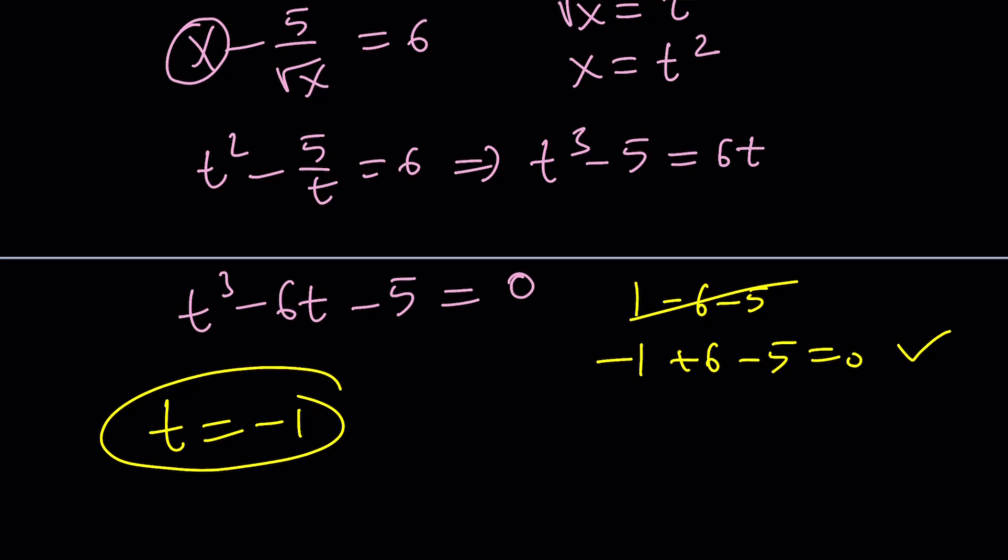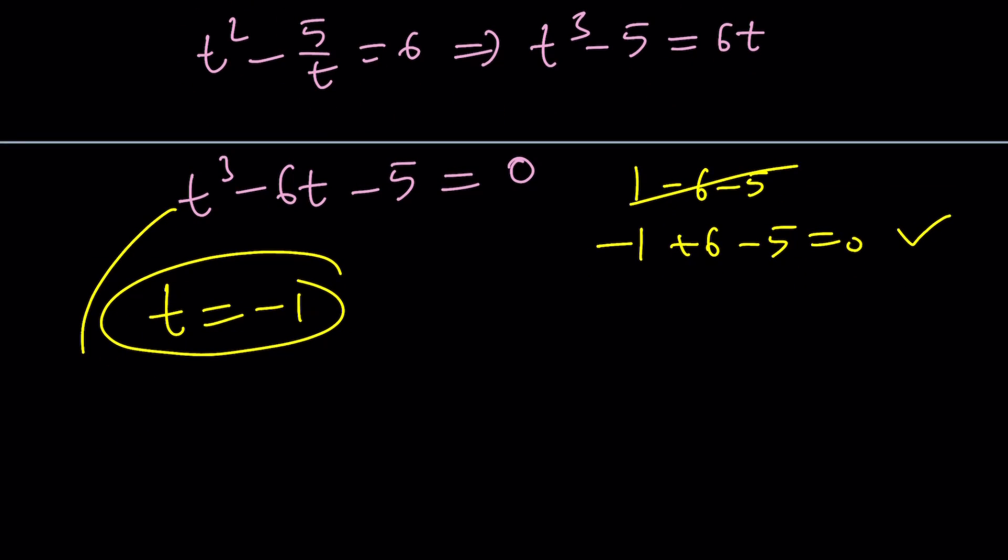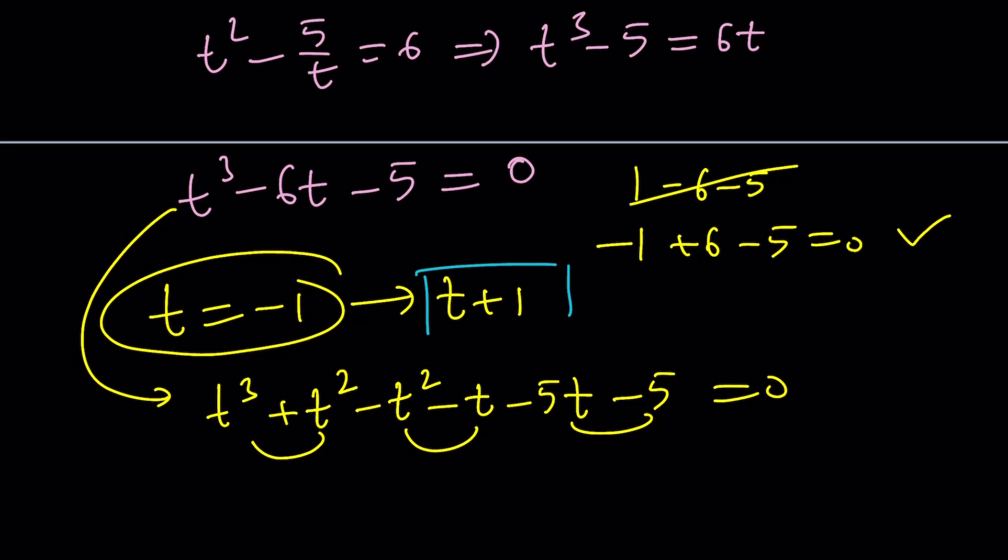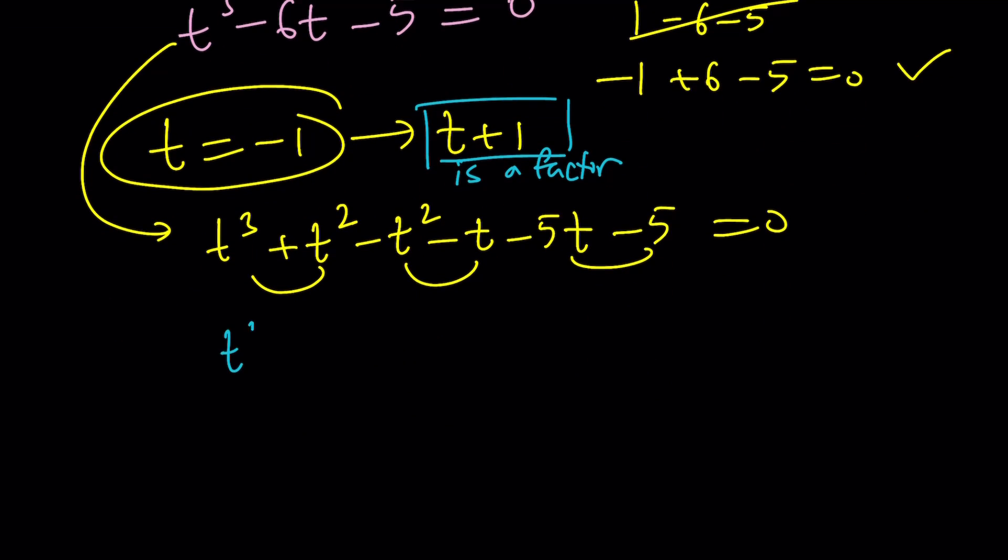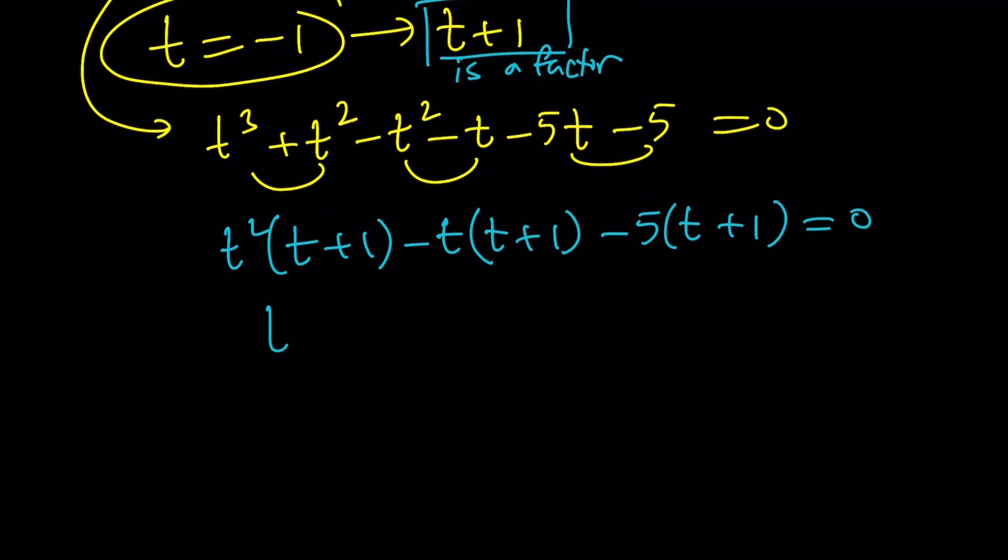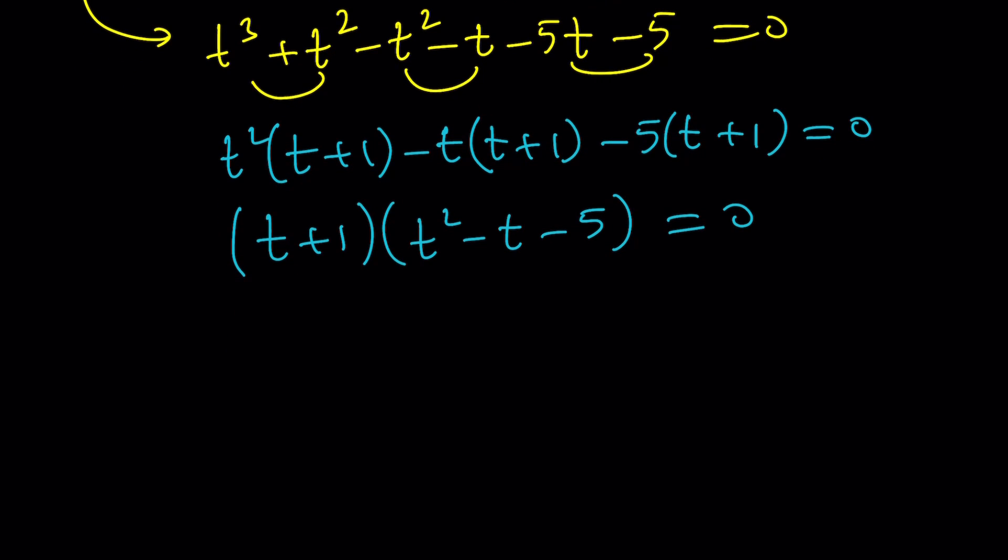And from here, we basically get to factor this. So I can write it as t cubed plus t squared and then minus t squared minus t minus 5t minus 5. So I kind of broke it down to get factors of t plus 1 because factor theorem tells us, if t equals negative 1 is a solution, then t plus 1 must be a factor. So knowing that makes it easier to factor this. You get t squared times t plus 1, or you could do polynomial division. And t plus 1 and negative 5 times t plus 1. Take out t plus 1, you get t squared minus t minus 5 equals 0.